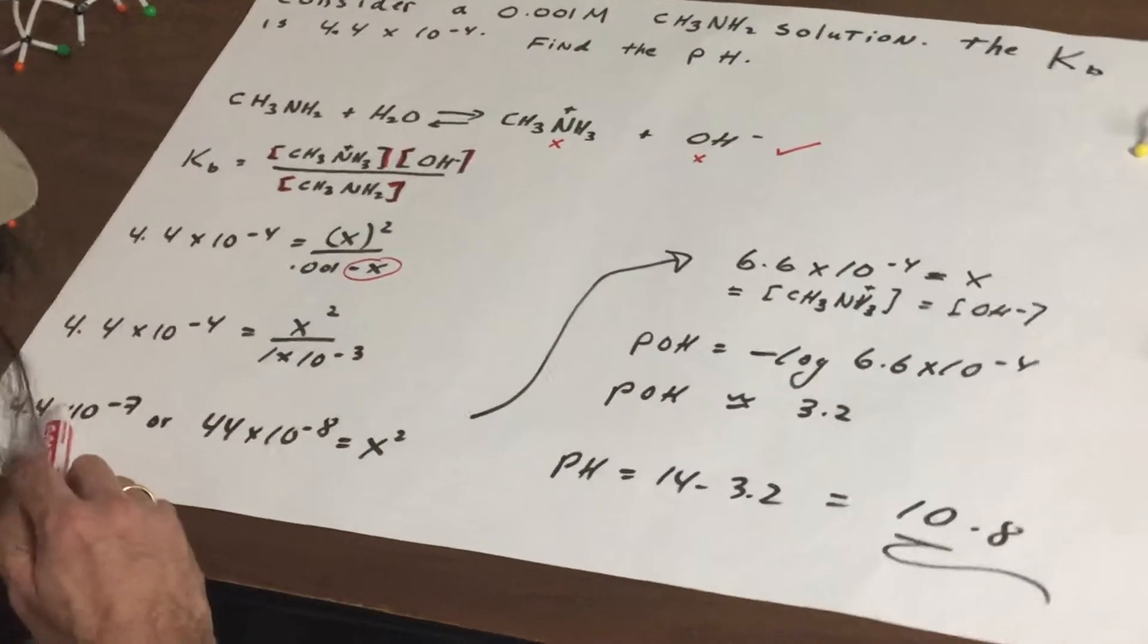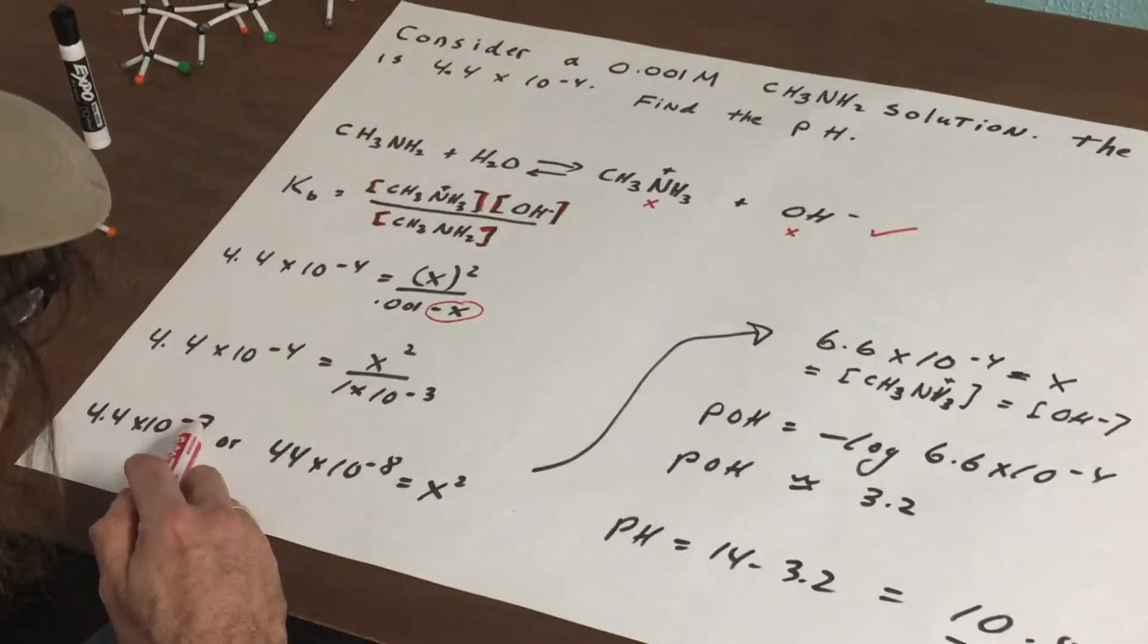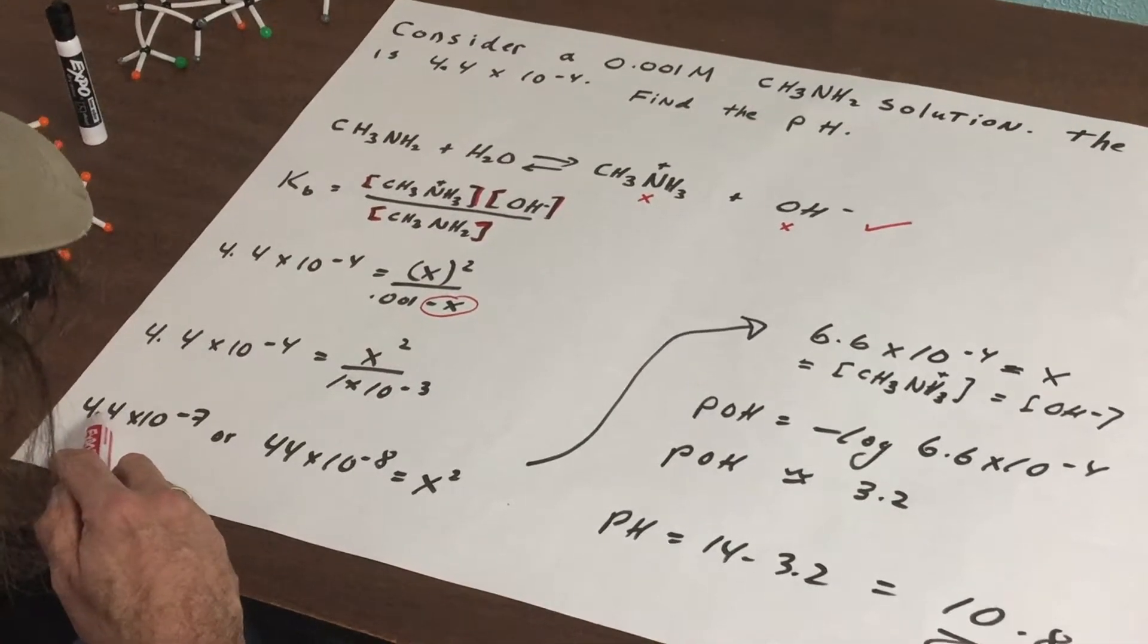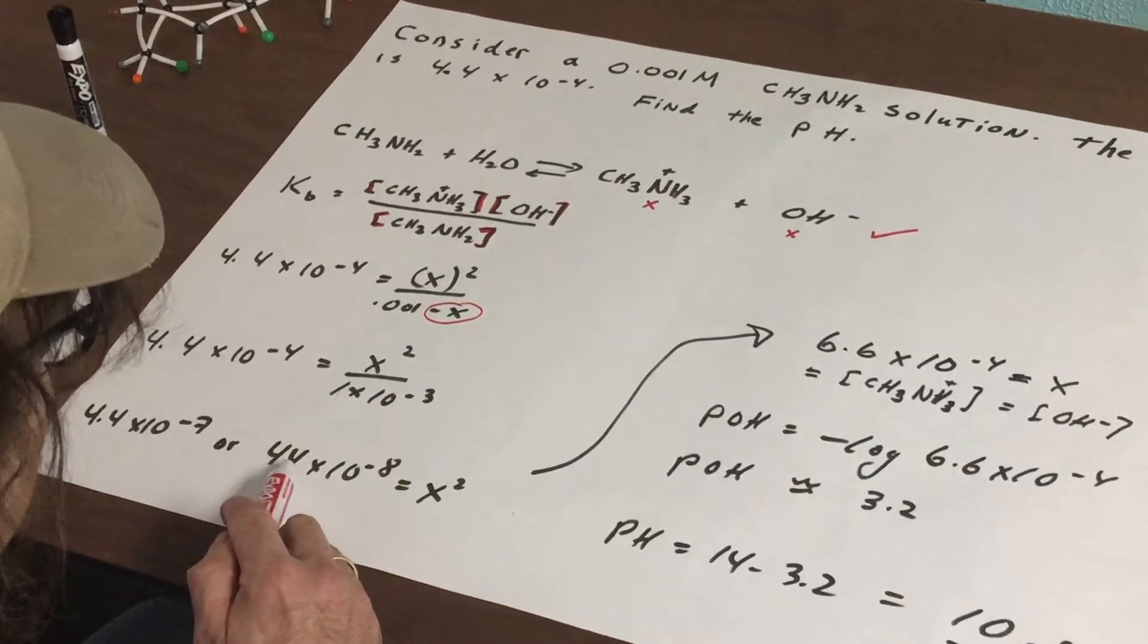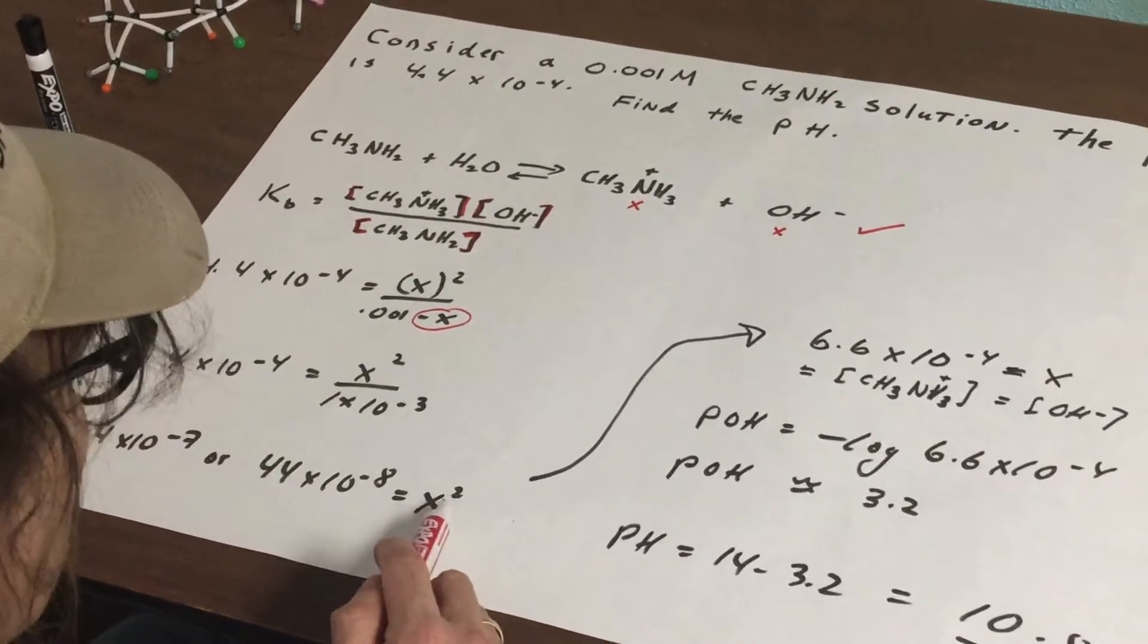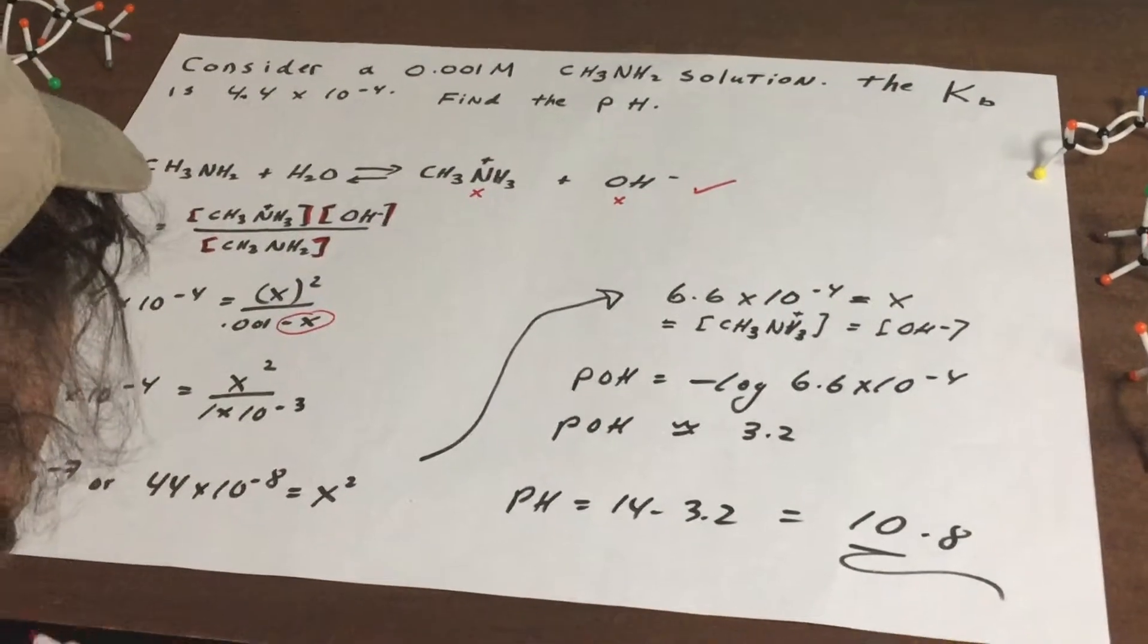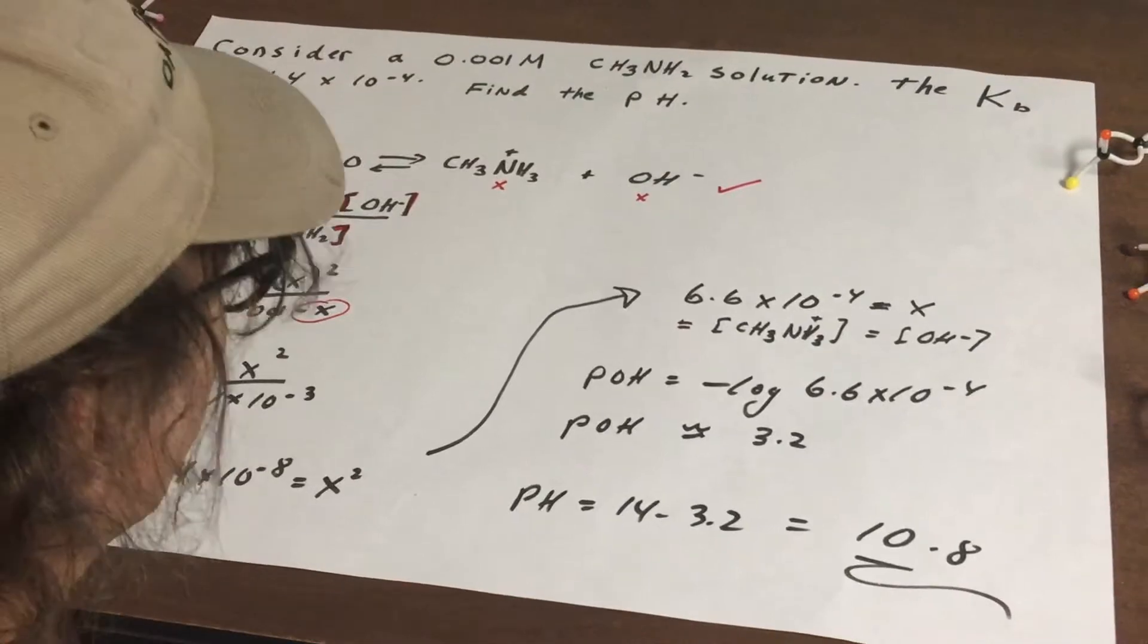I cross multiply and I get 4.4×10^-7, but since this is an odd number I'm going to rewrite it because I'm going to have to take the square root. Move the decimal up one, move it back one, so it becomes 44×10^-8 equals X². I smell blood, I'm going to square root the whole thing.